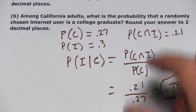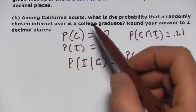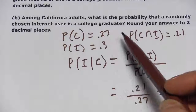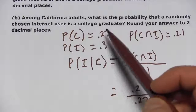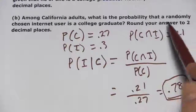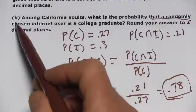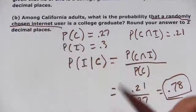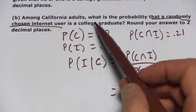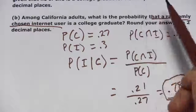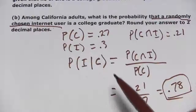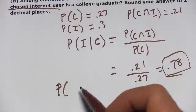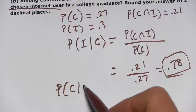Let's look at part B. It says: among California adults, what is the probability that a randomly chosen internet user is a college graduate? Now this doesn't have the word 'given' in it, but they're saying that the person chosen is an internet user, so that's what is given. And they want to know the probability of this person being a college graduate.